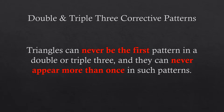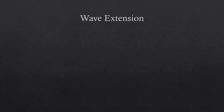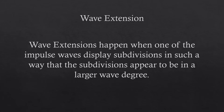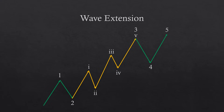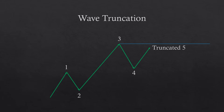We now move on to certain peculiarities of waves: wave extensions, truncation, alternation, and equality. Wave extensions happen when one of the impulse waves displays additional subdivisions such that they appear to be in the same wave degree, causing one impulse wave to be unusually larger than normal. Extensions can happen in any impulse wave but are most likely to occur in wave 3, which is usually the largest and strongest wave. Wave truncation is simply when wave 5 fails to surpass the end of wave 3. Unlike wave 3, which is required to surpass wave 1, wave 5 doesn't have to surpass wave 3.